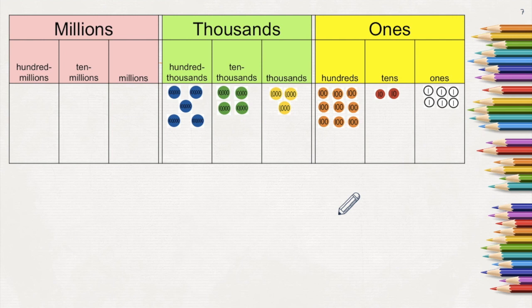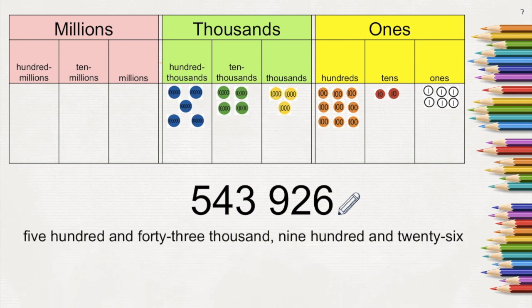Let's try to figure out what number is represented in this place value chart. Here, we have 6 ones, 2 tens, 9 hundreds, 3 thousands, 4 ten thousands, and 5 hundred thousands. The number may be written in standard form like this, and it is read as 543,926.